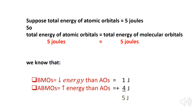The total energy of the atomic orbitals is equal to the total energy of the molecular orbitals. This means that if the total energy of the atomic orbitals is 5 joules, then the molecular orbitals must also have 5 joules of energy. But we know that bonding molecular orbitals are lower in energy than atomic orbitals, whereas anti-bonding molecular orbitals are higher in energy. So how is this possible?